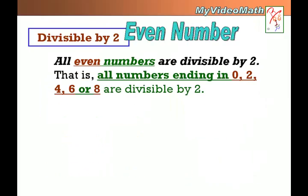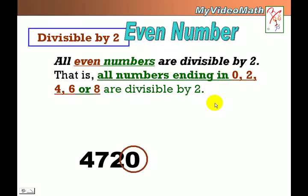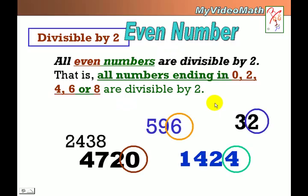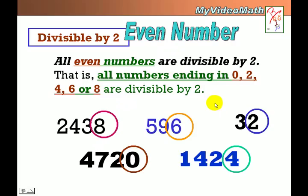Divisible by 2. If a number is divisible by 2, that number has to be an even number — an even number ending in 0, 2, 4, 6, or 8. All these numbers ending with even digits are therefore all even numbers and they are divisible by 2.